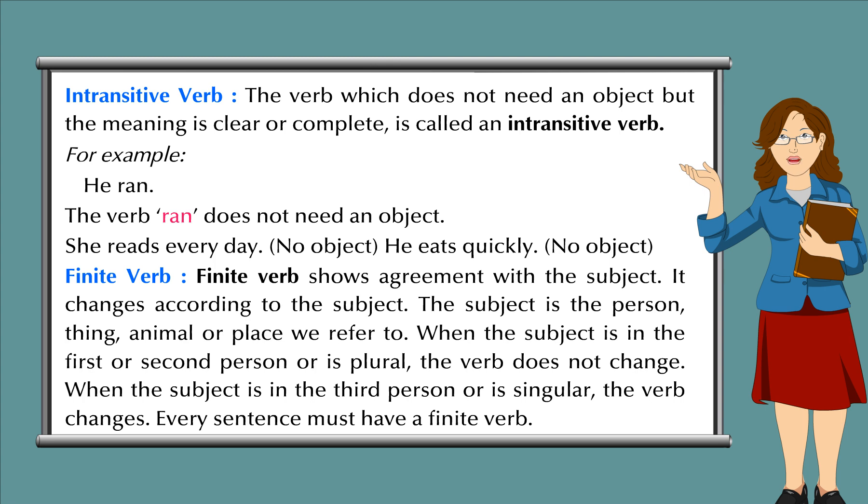Finite verb: Finite verb shows agreement with the subject. It changes according to the subject. The subject is the person, thing, animal, or place we refer to. When the subject is in the first or second person or is plural, the verb does not change. When the subject is in the third person or is singular, the verb changes. Every sentence must have a finite verb.